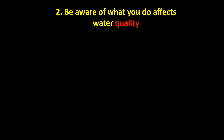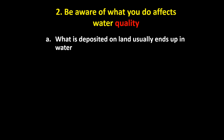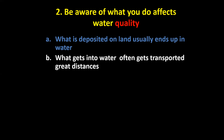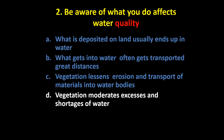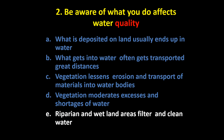Fresh water is easily overused and polluted, so it's valuable and we should protect it. Whatever is deposited on land or discarded usually ends up in water, and what gets into water is often transported great distances along rivers or even into the ocean. Vegetation lessens the erosion and transport of materials into water bodies, and especially moderates excesses and shortages of water, acting as a buffer between terrestrial and aquatic systems.